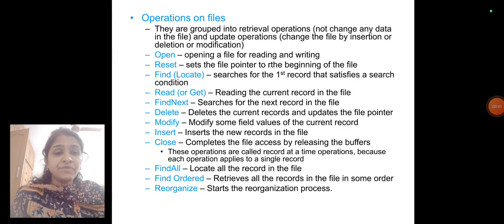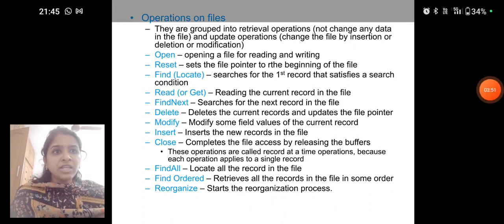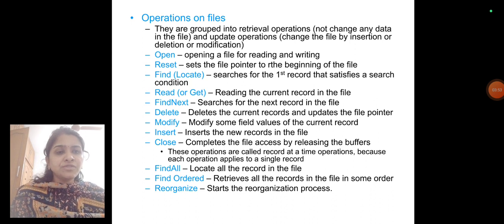Operations on files. They are grouped into retrieval operations and update operations. Open: opening a file for reading and writing. Reset: sets the file pointer to the beginning of the file. Find: searches for the first record that satisfies a search condition. Read or Get: reading the current record in the file.